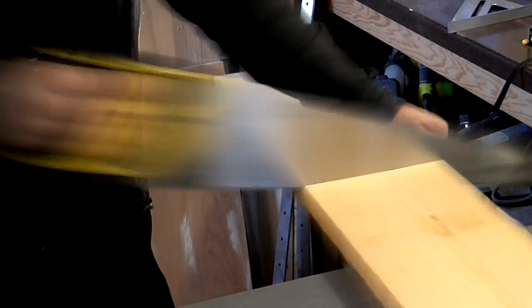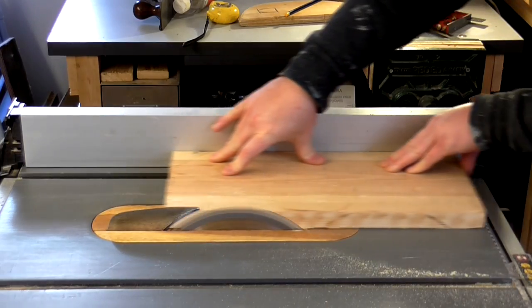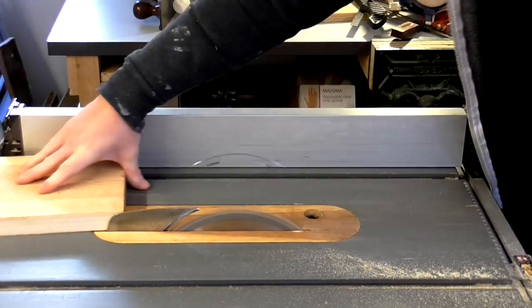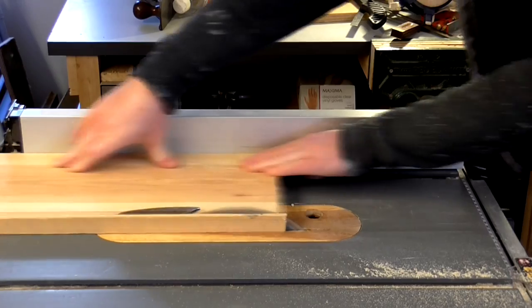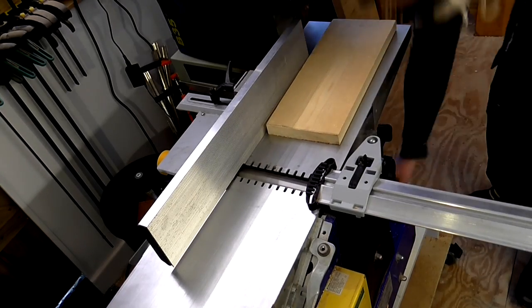I chopped off a piece with a handsaw and then squared off the edges on the table saw. The piece had a slight bow to it so I straightened it up on the jointer.